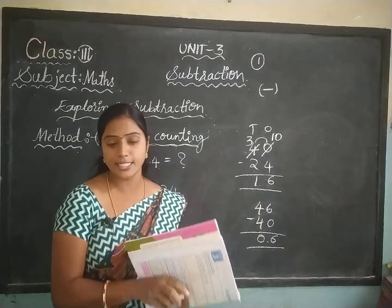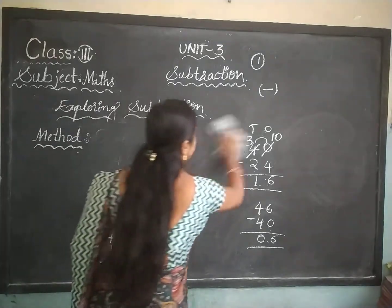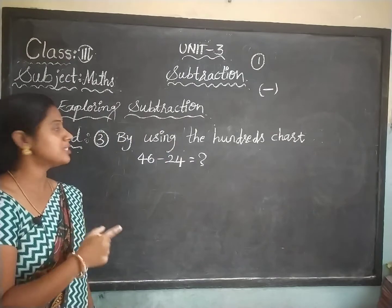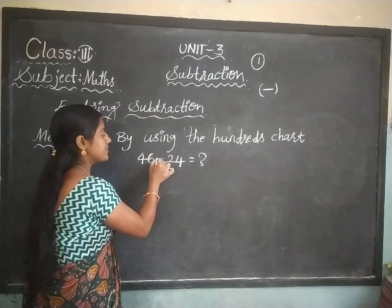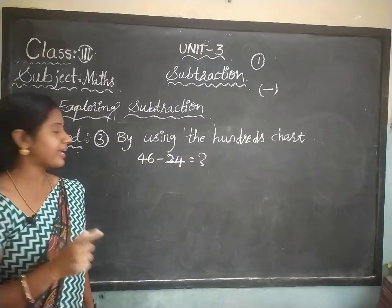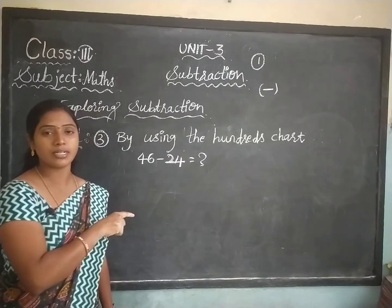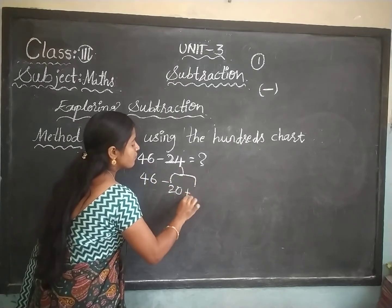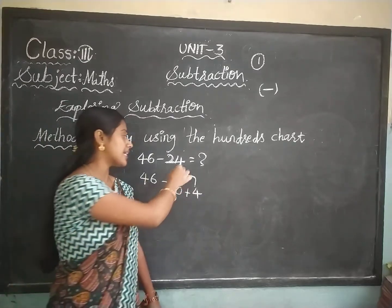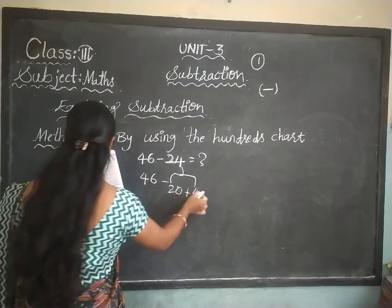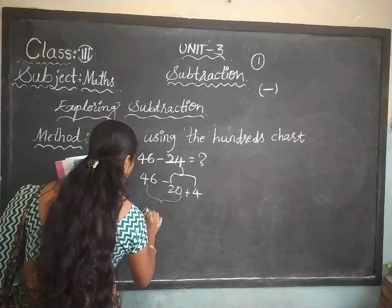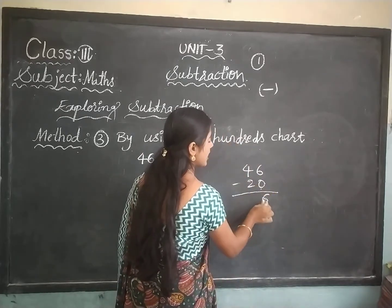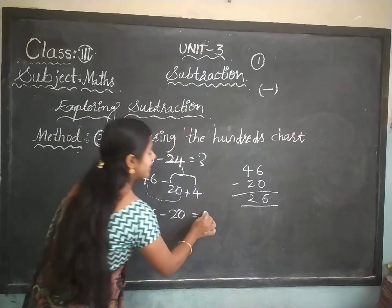Now we are going to Method 3: by using the 100 chart. The question is 46 minus 24. In this method you have to break the second number. 24 means 20 plus 4. Now subtract 46 minus 20 first: in the ones place 6 minus 0 stays 6, and 4 minus 2 equals 2. So 46 minus 20 equals 26.